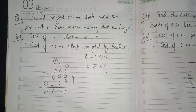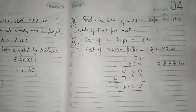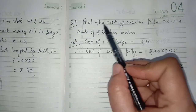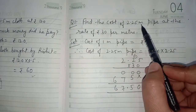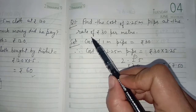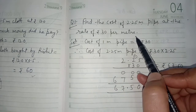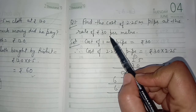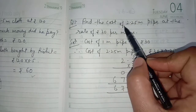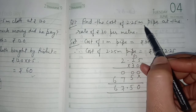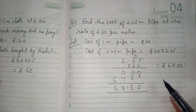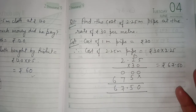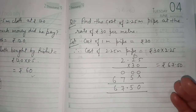The last question, number 11: Find the cost of 2.25 meter pipe at the rate of rupees 30 per meter. Rupees 30 is the cost of 1 meter pipe. We need the cost of 2.25 meter pipe. When the cost of one thing is given, we find the cost of more by multiplying.